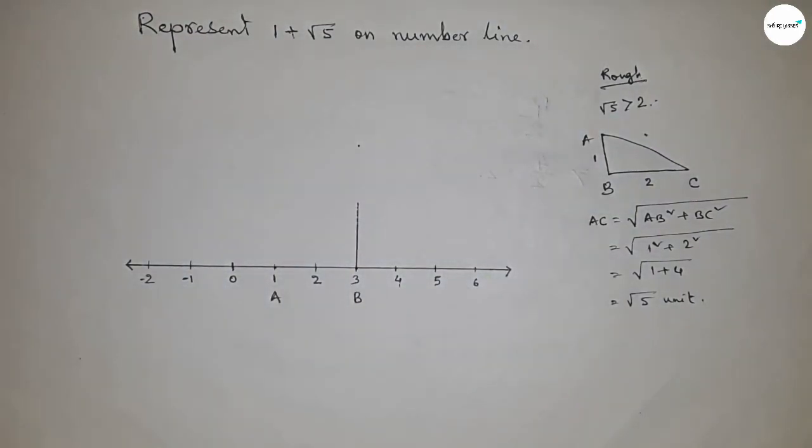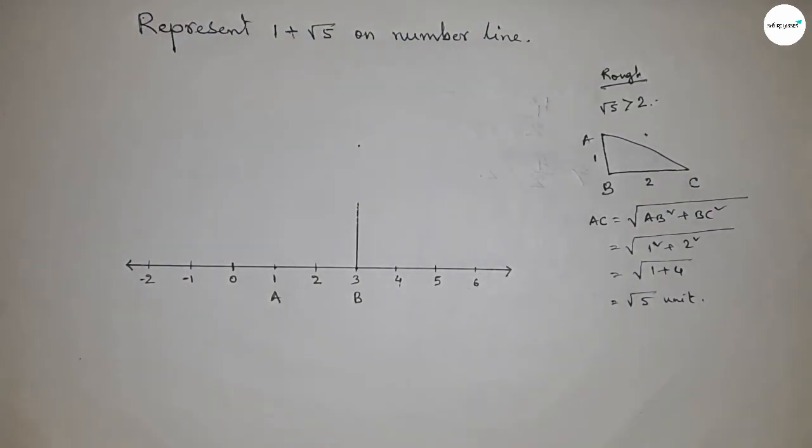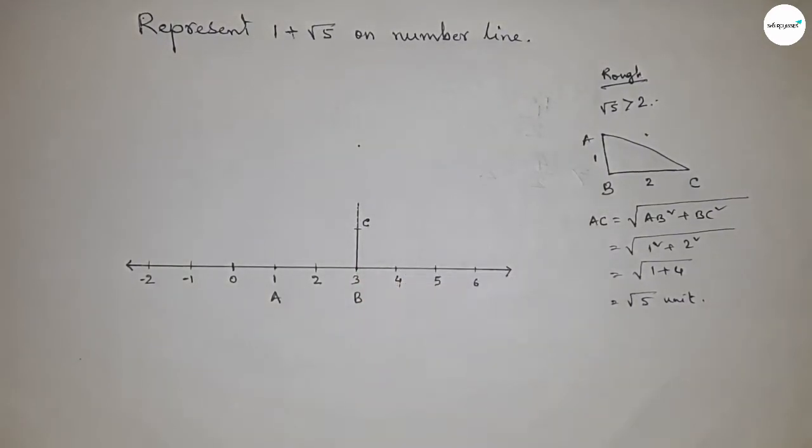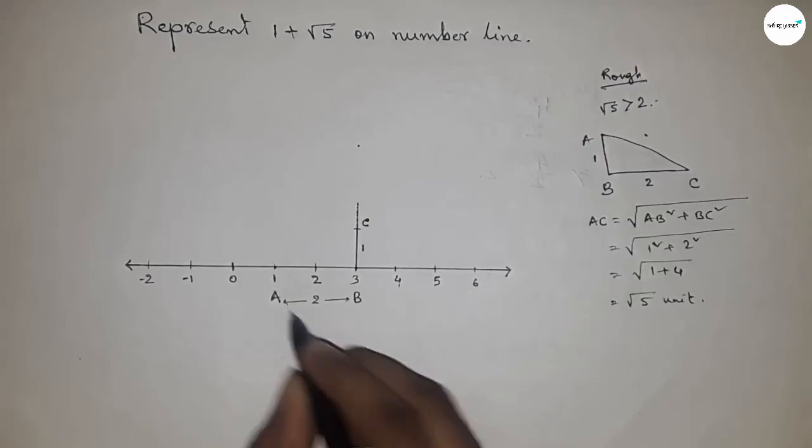Now take the length between any two numbers with the compass and place it here. This is point C, and this is 1 unit length and this is 2 unit length.